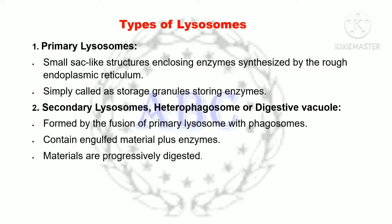The second type is secondary lysosomes, also called heterophagosomes or digestive vacuoles. These are formed by the fusion of primary lysosomes with phagosomes. They contain engulfed material plus enzymes, and the materials are progressively digested in the secondary lysosomes.